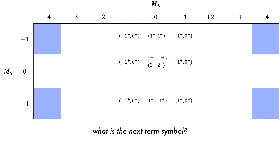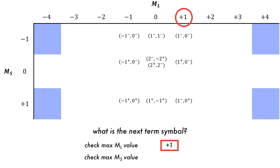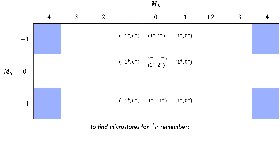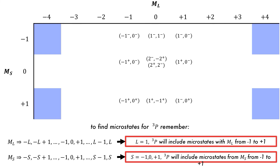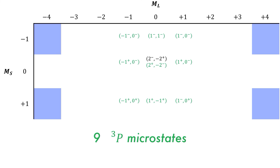What will be our next term symbol? Look at the table and find the maximum ML value remaining, which is +1, meaning P. Then check the available MS values — for these ML values, we have all values available from -1 to +1. So we will have a triplet P atomic state. If L equals 1, then ML will range from -1 to +1: -1, 0, and +1, giving 3 different ML values. For MS, the values run from -1 to +1. As a result, we will have 9 different microstates in the triplet P atomic state, one from each of the populated boxes.